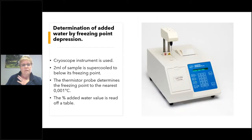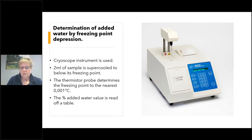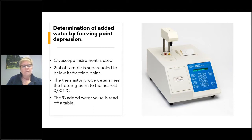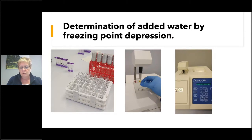The next test is the freezing point test, done with a cryoscope. This test is done to check for added water in a sample. Two milliliters of sample is supercooled below its freezing point. The thermistor probe determines the freezing point to the nearest 0.001°C. The added water value is then read off a table. This can also be done by calculation using the IDF method — there is a calculation to determine the added water percentage.